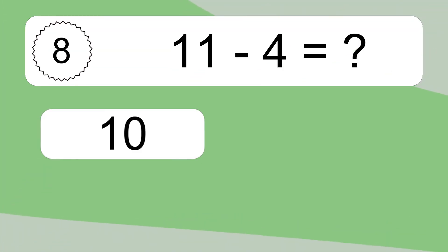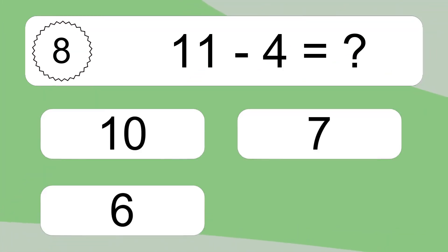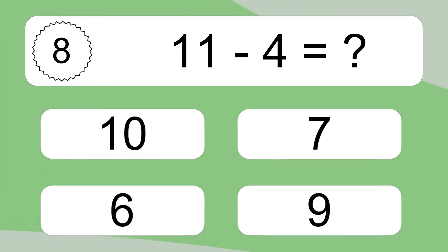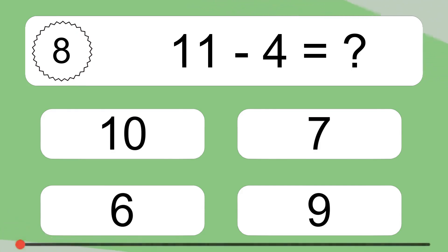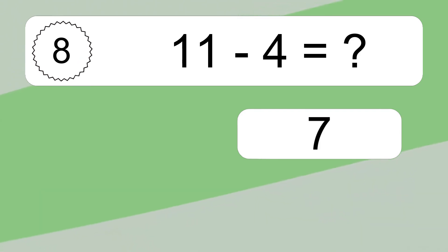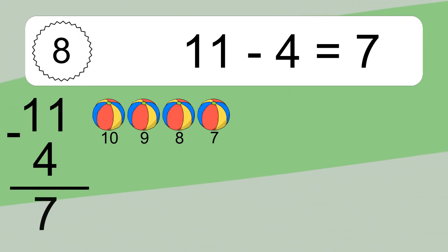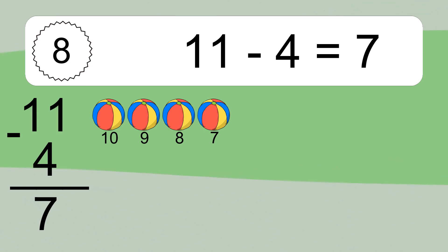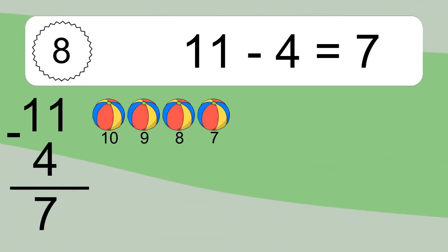11 minus 4 equals what? 11 minus 4 equals 7. Let's count it: 10, 9, 8, 7.